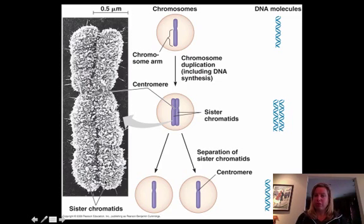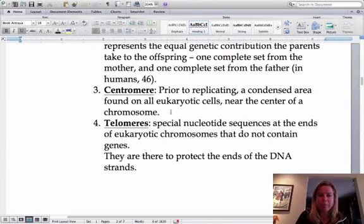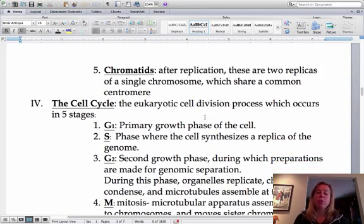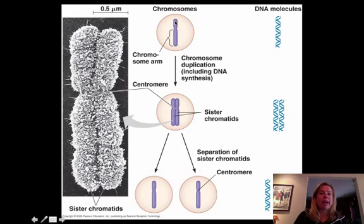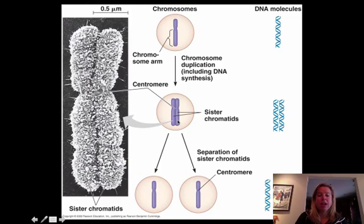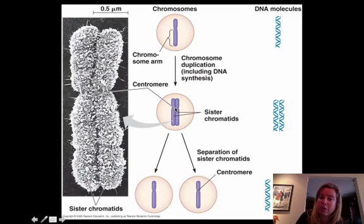The telomeres are going to be at the tips of the chromosomes, and as you age, the telomeres get shorter and shorter. Then we have chromatids. Let's say this is your mom's version of chromosome number one — the DNA is going to copy itself, and now chromosome number one has an exact copy of itself. These are called sister chromatids. You could also have chromosome number one from your father, and that's going to make a copy — those two are also called sister chromatids. Sister chromatids are held together by the centromere, a little disc of protein.